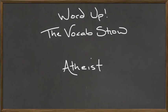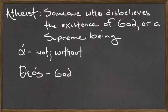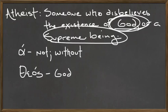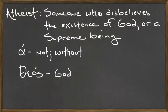Hey everyone, welcome to a bonus episode of Word Up the Vocab Show. In this episode we're looking at the word atheist. What's an atheist? An atheist is someone who disbelieves the existence of God or a supreme being. This person believes that God does not exist, or that a supreme being in our universe does not exist.